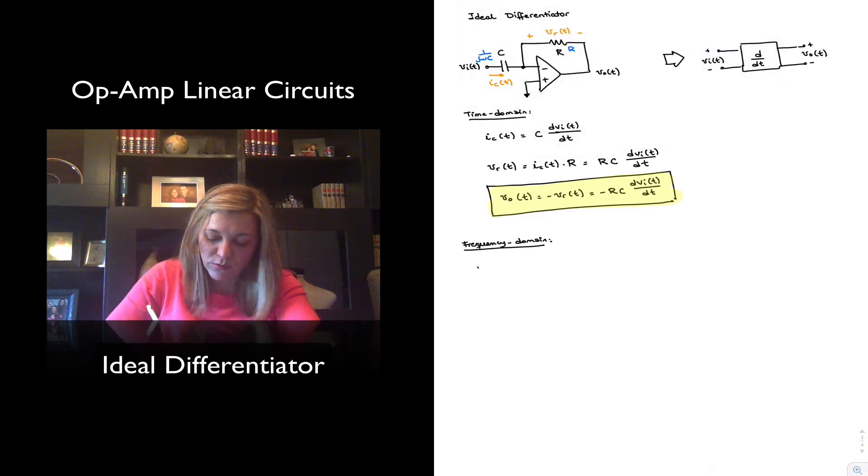And I will write my phasor voltage Vout is equal to negative the feedback impedance over the input impedance. So negative R divided by 1 over jωC times phasor Vin or negative jωRC times phasor Vin.